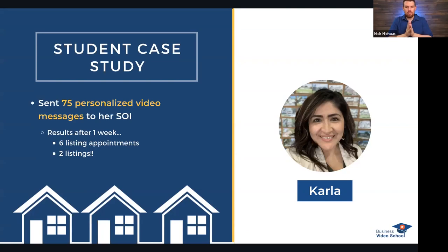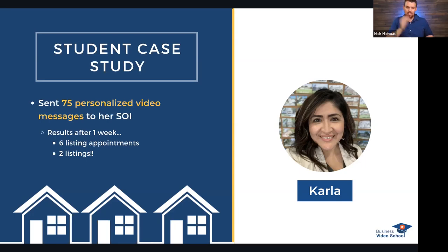She came up with a script — I'm going to show you that script in a few minutes so you can take a copy — and she went through and sent personalized video messages, recording essentially the same thing into her phone camera, just changing the intro with the person's name. She sent 75 video messages over the course of two weeks, and at the end of the second week she had already set six listing appointments and secured two listings.